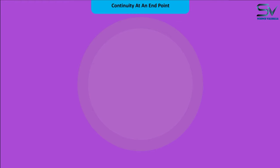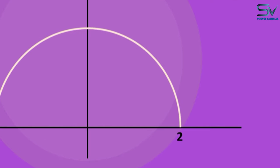How can we check continuity at any endpoint? As you can see, there are right and left endpoints. First, we examine the continuity at the right endpoint x equals 2.